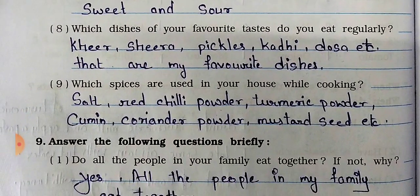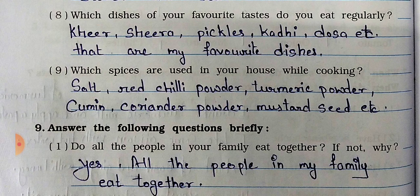Question number 8: Which dishes of your family's tastes do you eat regularly? Answer: Kheer, syrup, pickles, curry, dosa, etc. are my favorite dishes and we make these often at home. Question number 9: Which spices are used in your house while cooking? Answer: Salt, red chili powder, turmeric powder, cumin, coriander powder, mustard seeds, etc. are the spices we use while cooking.